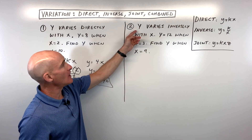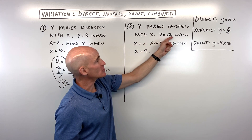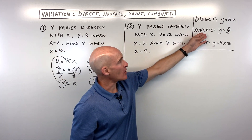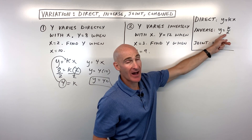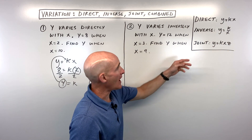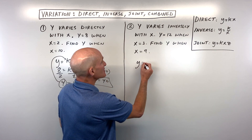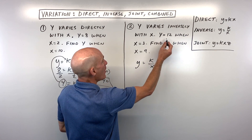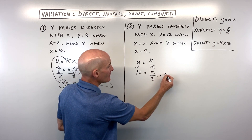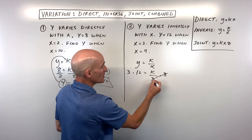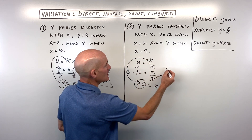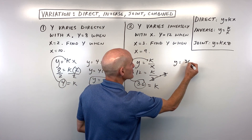y varies inversely with x. y is equal to 12 when x is equal to 3. Find y when x is equal to 9. For inverse variation, I start by writing the general equation: y equals k divided by x. Notice that the variable is in the denominator, whereas with direct variation the variable is in the numerator. Substituting y equals 12 and x equals 3, then multiplying both sides by 3, k is equal to 36. Putting 36 back in for k, we have y equals 36 divided by x.